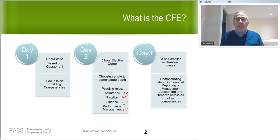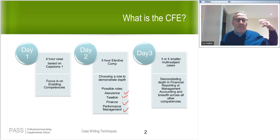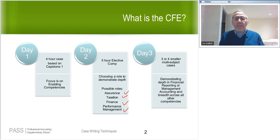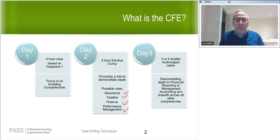Day three is only four hours long, and instead of one big case, there are typically three cases adding up to exactly 240 minutes. Cases can range from 60 to 90 minutes each. On day three, everybody writes the exact same cases — you don't choose a role. Therefore, day three cannot test any subject at the elective level; all subjects are tested at the core level, since everybody is writing the same cases.